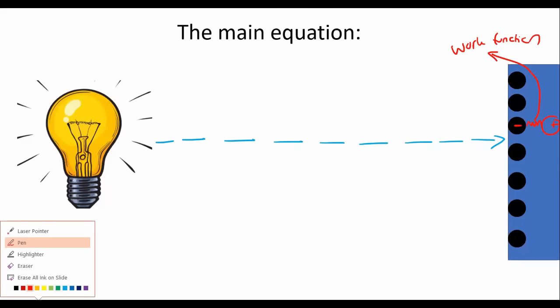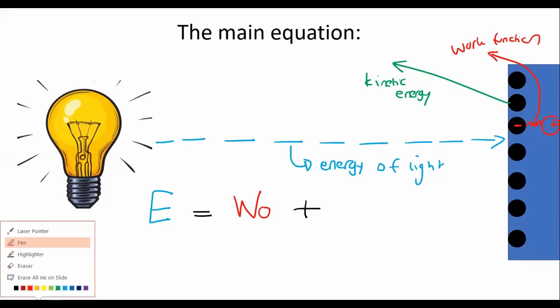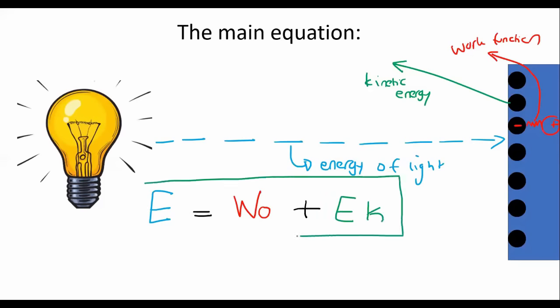And then, if there is any energy left over, it will be converted into kinetic energy. And then this one here is energy of light. And so the law of nature tells us that the energy of the light is going to be used up to release the electron, which is the work function. And then if there is any leftover energy, then that will go into kinetic energy. And this is the main formula that governs this entire chapter.